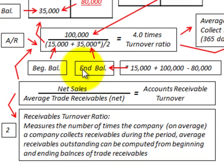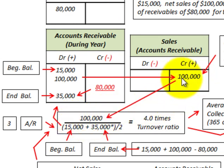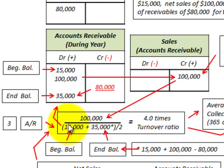Let's calculate this. First, for net sales, we have $100,000 — that's the amount we calculated, net of any allowances or discounts. That would be our net sales. Then we divide by our average accounts receivable.